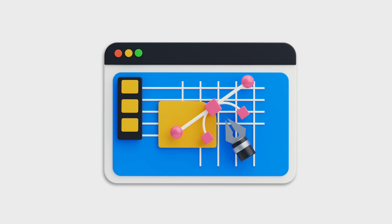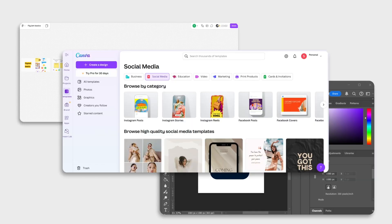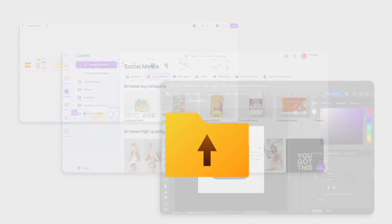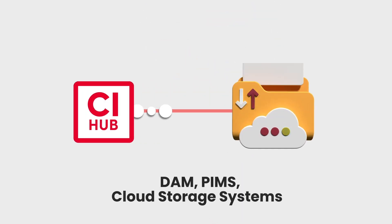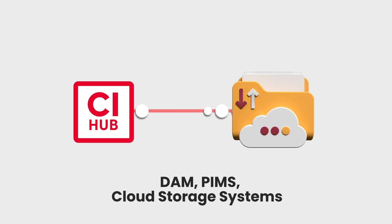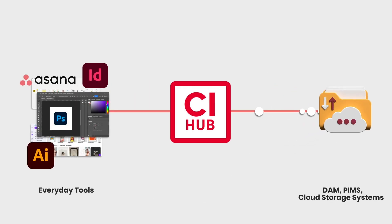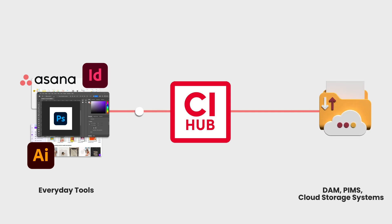Imagine you work every day with Adobe Photoshop, Figma, and Canva. Your company stores its digital assets in a DAM system. CI Hub acts as a bridge between your digital assets stored in DAM, PIMs, or cloud storage systems, and your work tools, allowing direct access and usage of assets without the need for constant uploading or downloading.